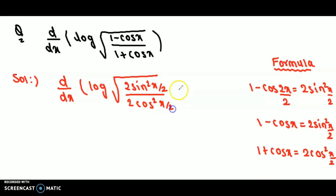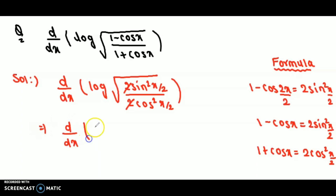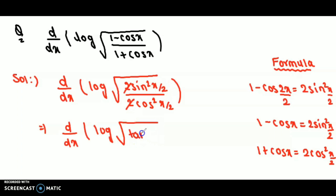Now the 2 and 2 will cancel, so what we are getting is d/dx of log of square root of sin²(x/2) over cos²(x/2). We know that sin θ over cos θ is tan θ, so sin²(x/2) over cos²(x/2) becomes tan²(x/2). Note that we have not started differentiating yet — we are first simplifying the expression.